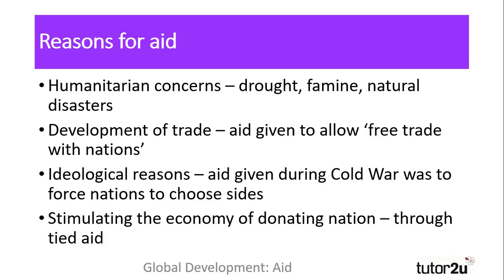Firstly, aid is given for humanitarian causes — things like droughts, famines and other natural disasters. Secondly, aid is given as a form of trade liberalisation, to enable free trade between donor nations and those in receipt of the aid. This is often reinforced through the imposition of structural adjustment policies, which require those receiving aid to reduce import tariffs, privatise their state services and encourage overseas investment.